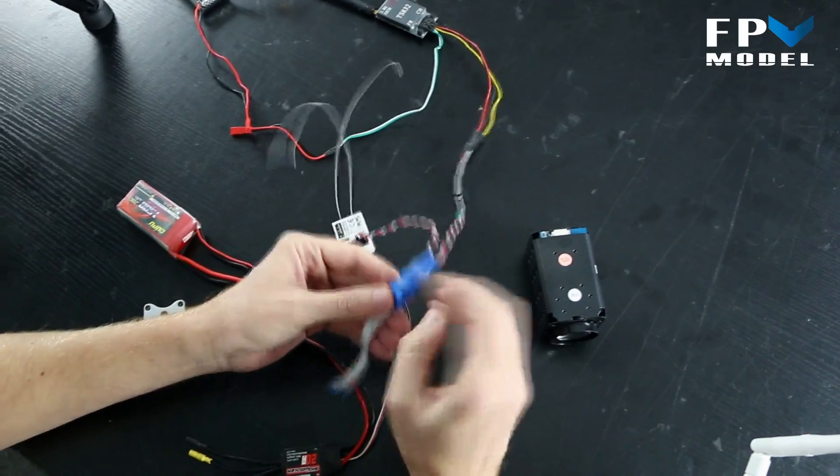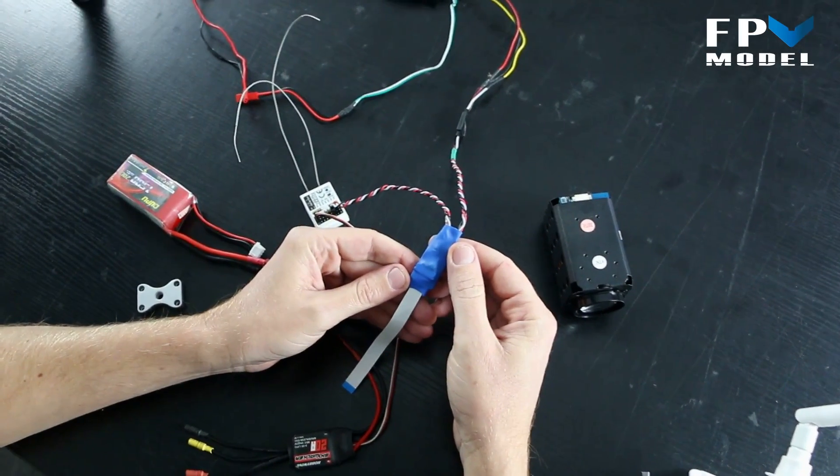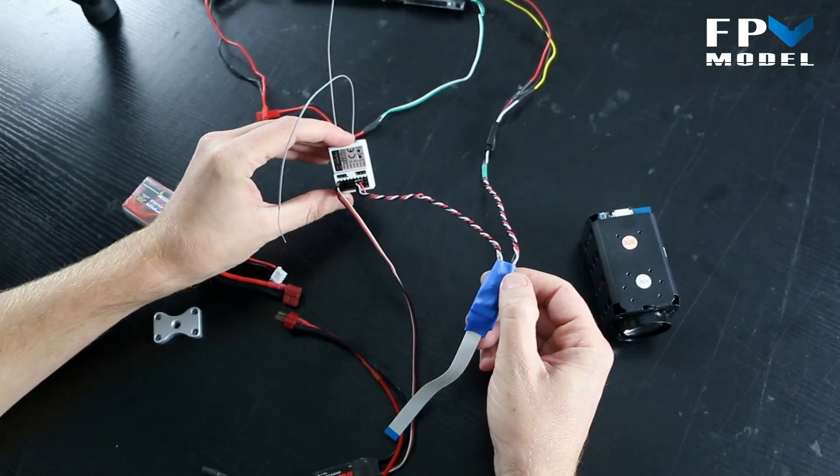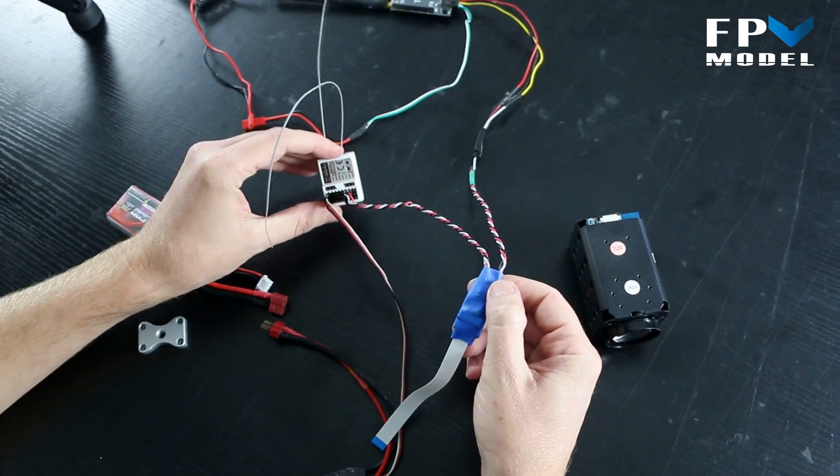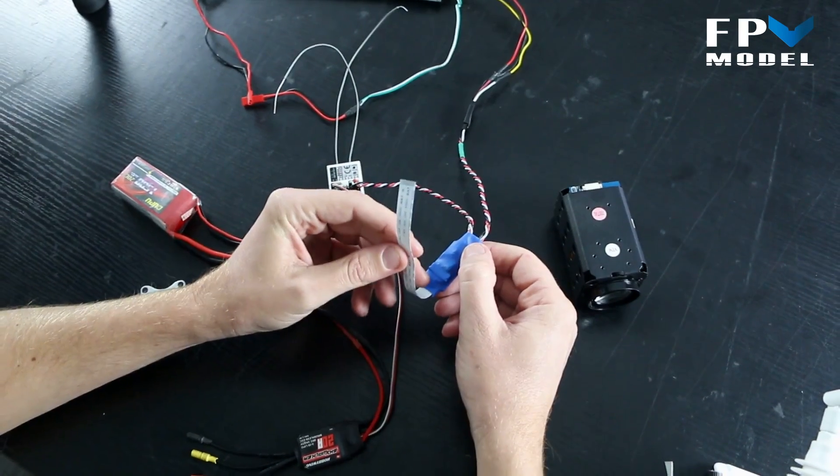First of all, what you're going to notice is a little blue module. What you do is you connect this to your camera, you also connect it to your receiver and your video transmitter. What this is going to do is allow you to control the zoom and the focus of the camera.